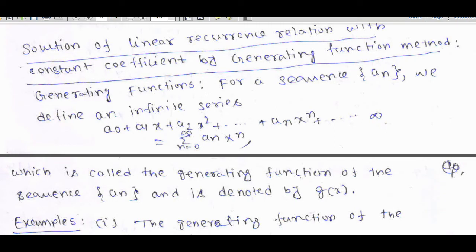Hello everyone. Today we are going to talk about a solution method of linear recurrence relations with constant coefficients by a method of generating function. This is called the generating function method, and we are going to talk about the solution process of a linear recurrence relation with constant coefficients using this method.